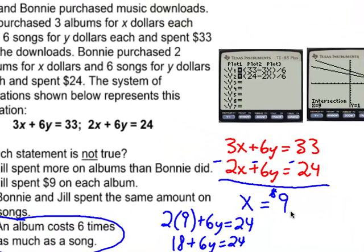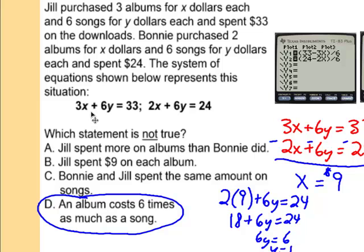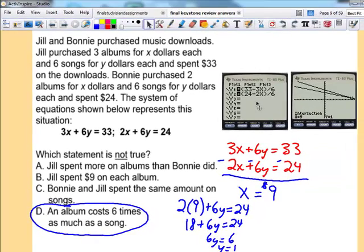I use the elimination method and I could see that an album cost $9. To figure out the price of a song, I can substitute 9 into either equation. I happen to choose the second one and I solve for Y and I got 1. So each song is a dollar.